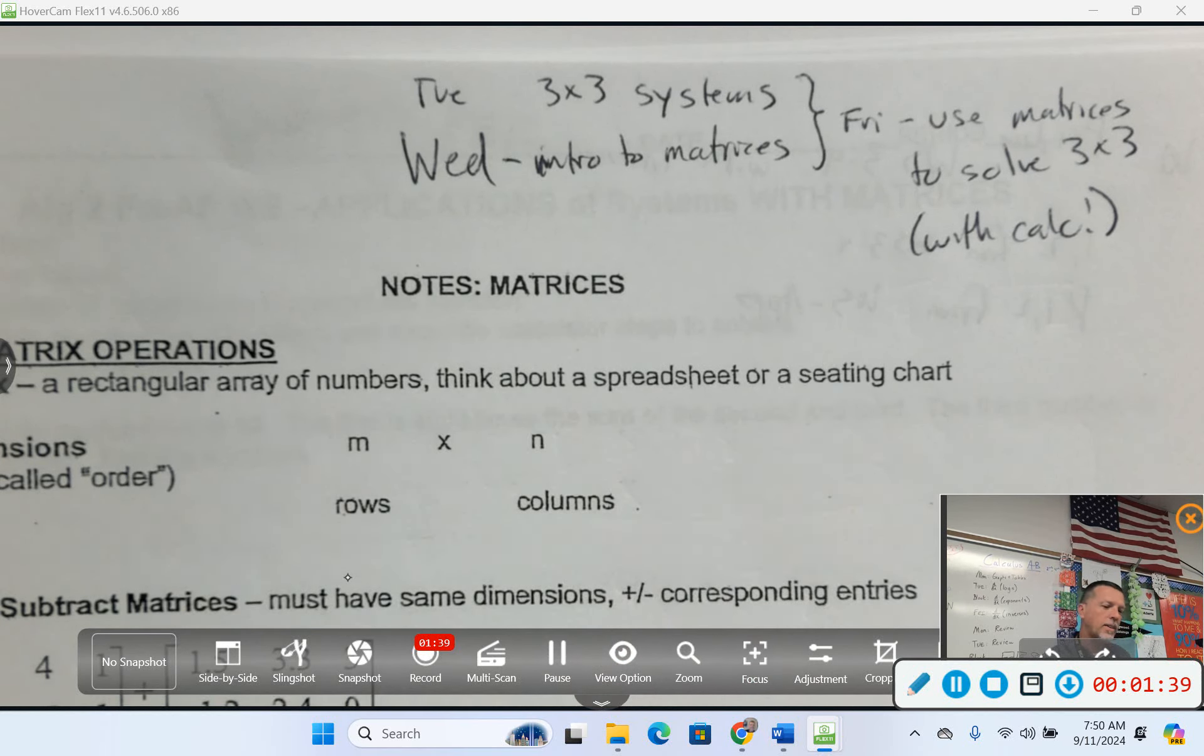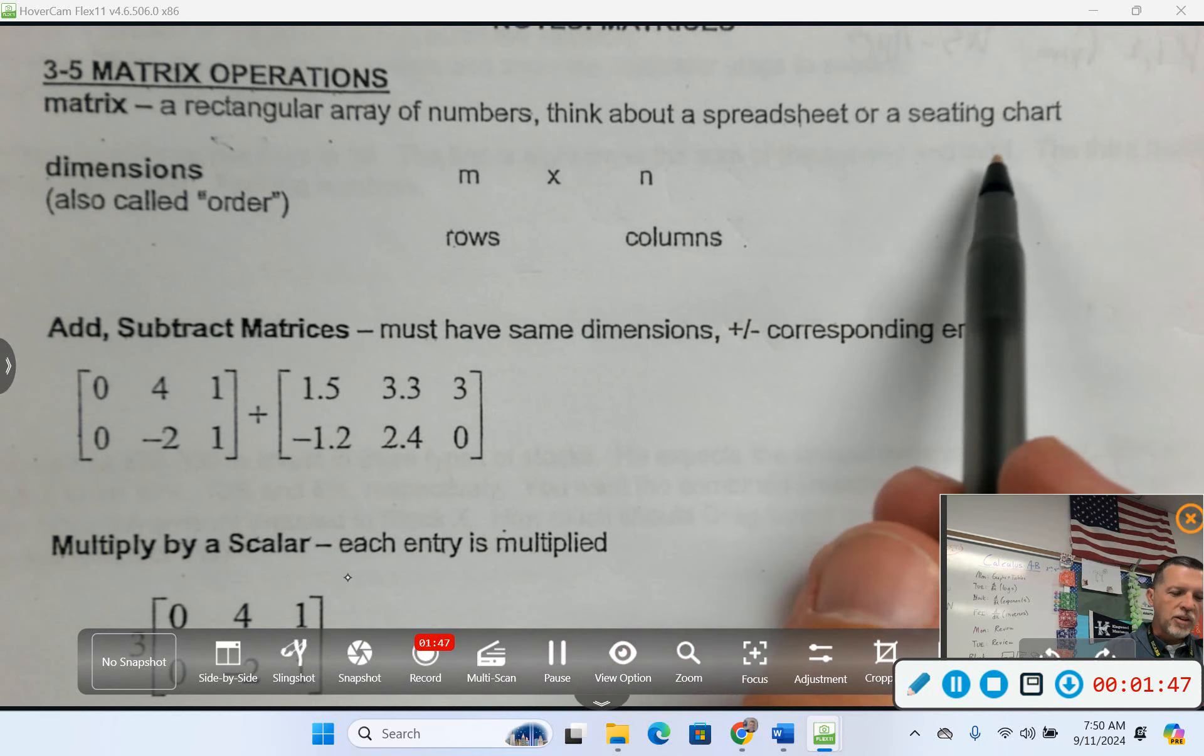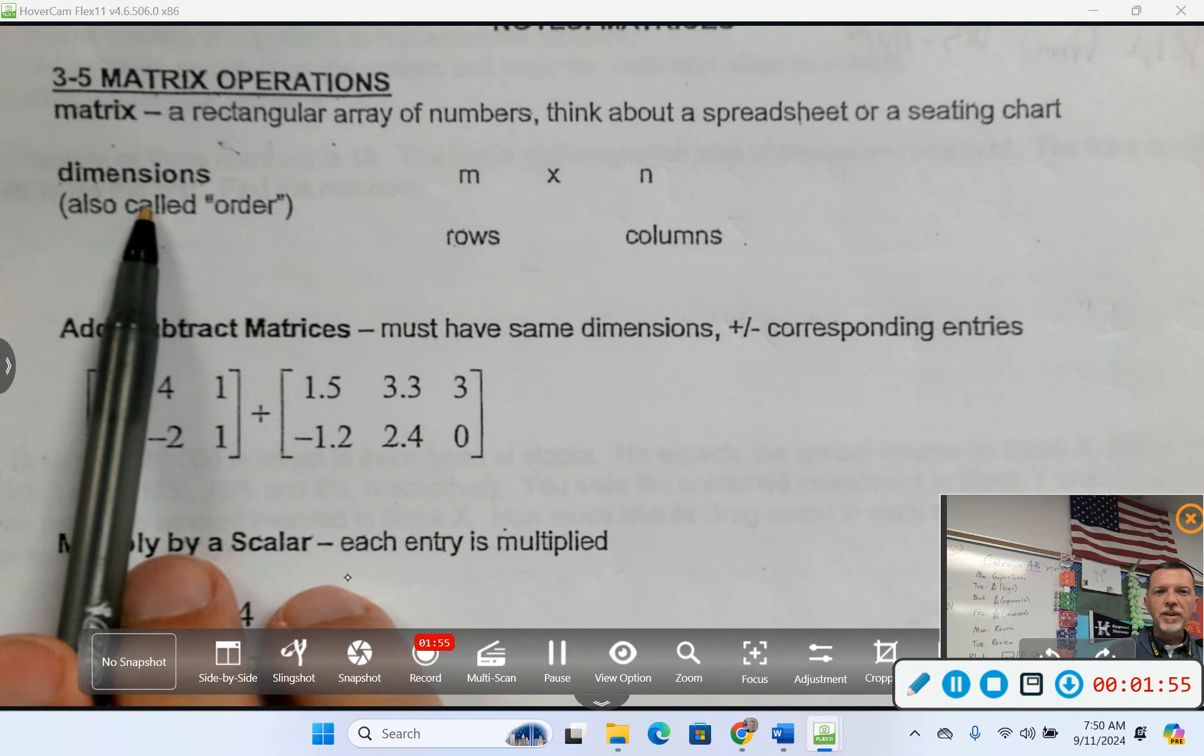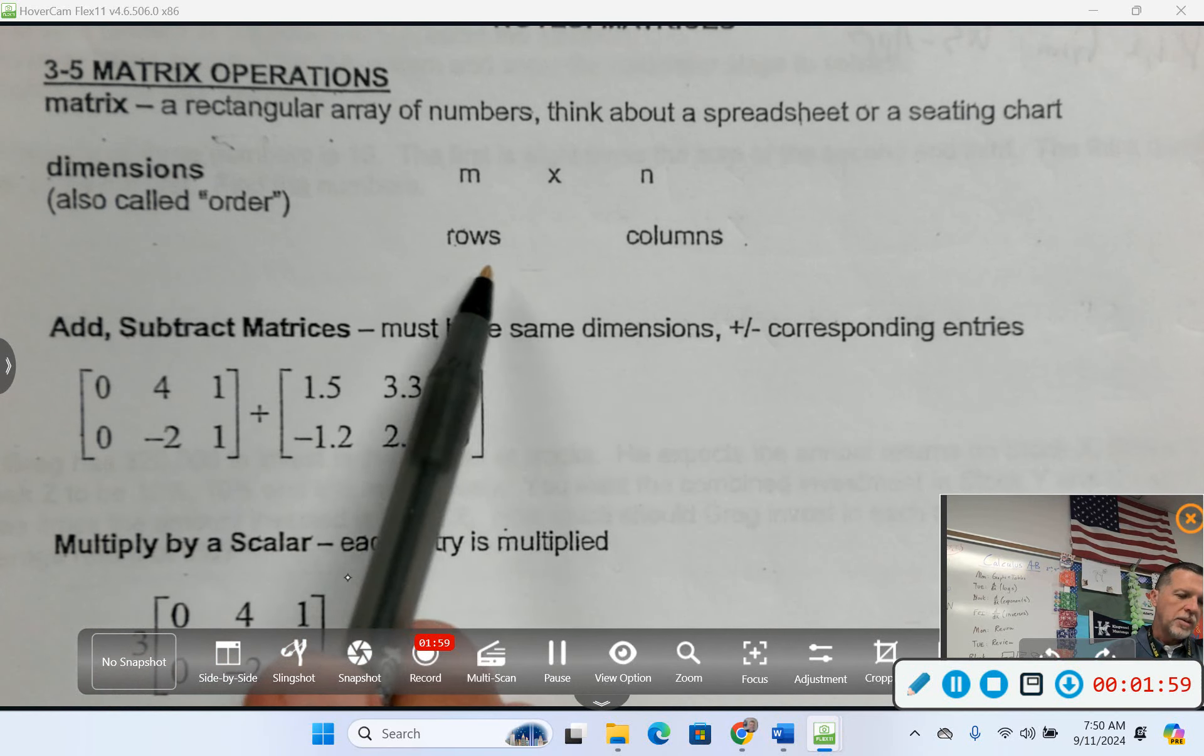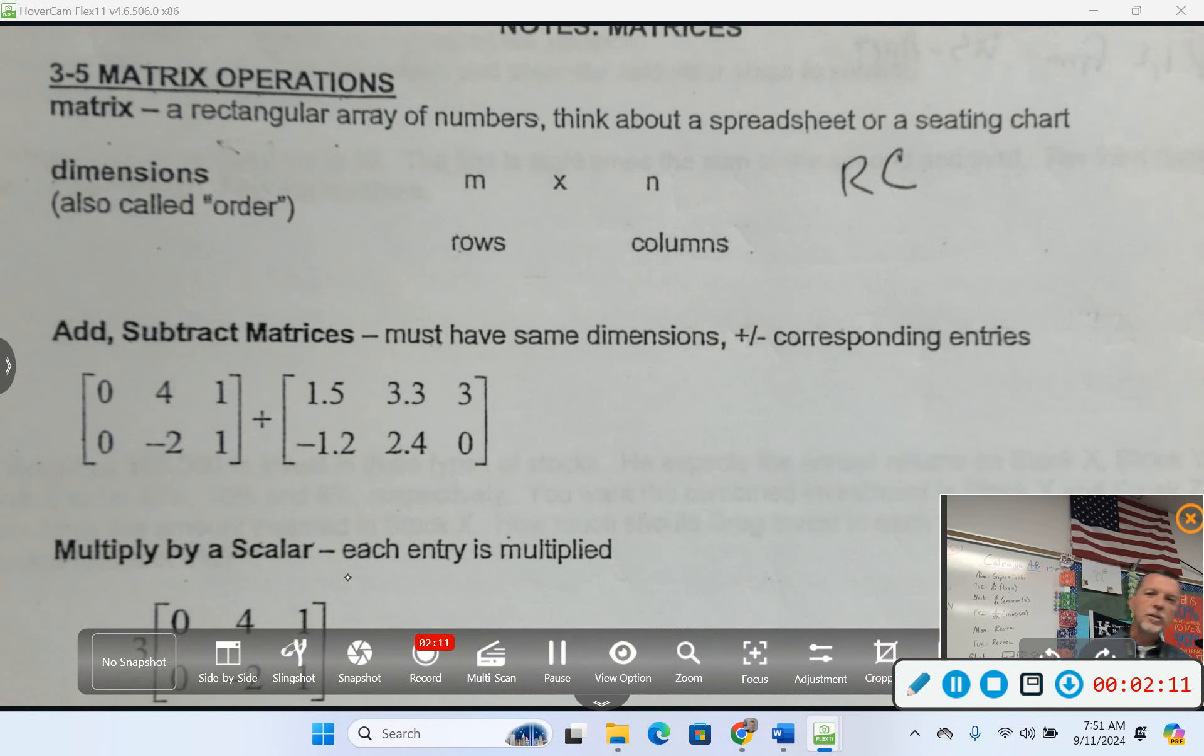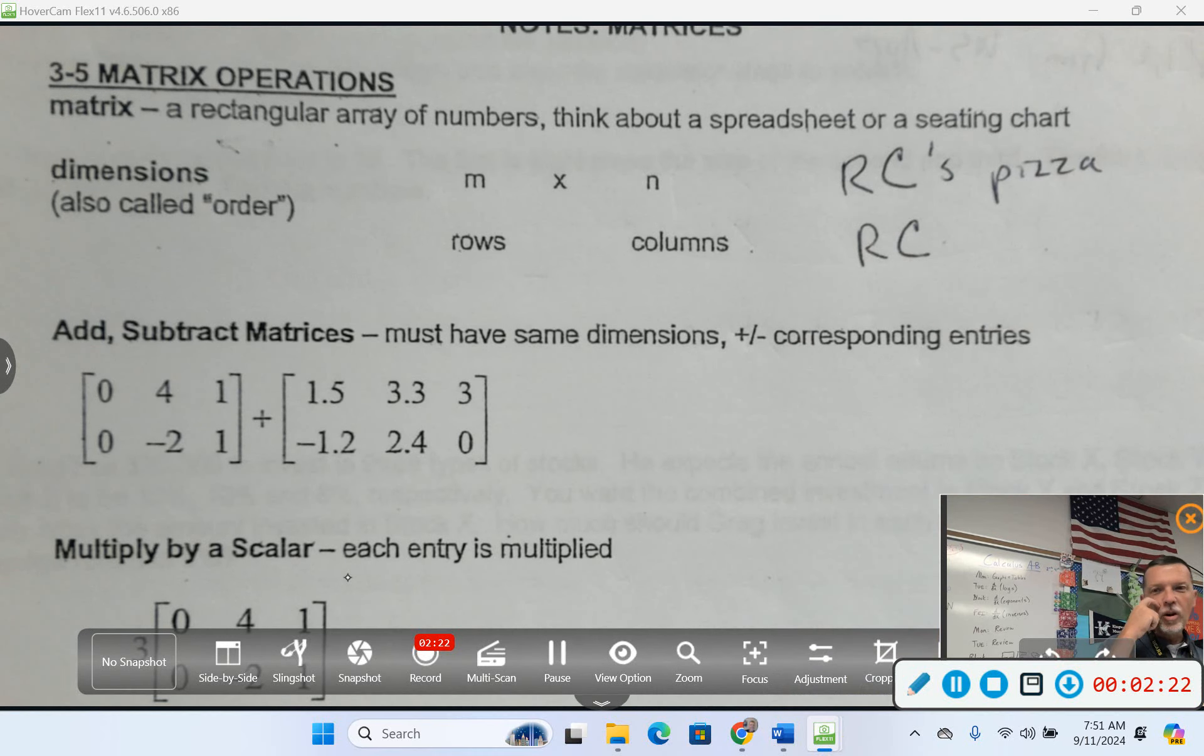Back to today's notes on matrices. A matrix is a rectangular array of numbers, like a spreadsheet or a seating chart. They have a dimension or an order, and it's always row by column. You count the rows and then you count the columns. We're going to use this several times, like RC's Pizza. I'm a little more old school - there's a certain type of cola called RC Cola. RC, row by column, whatever you need to remember.